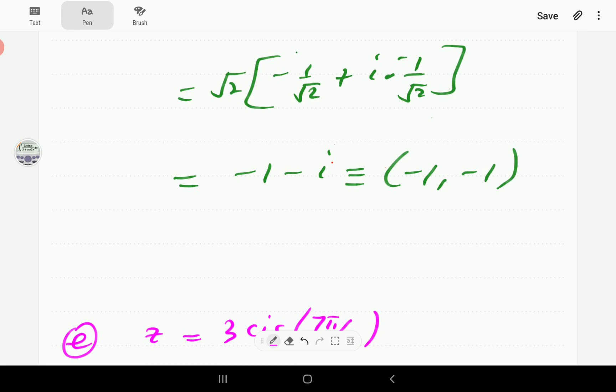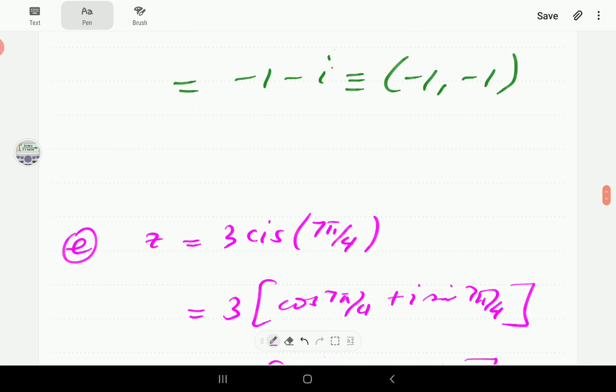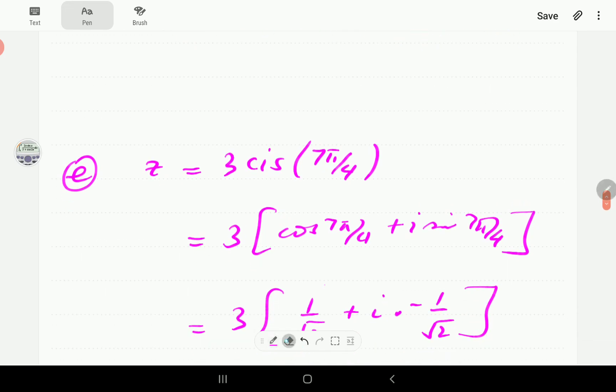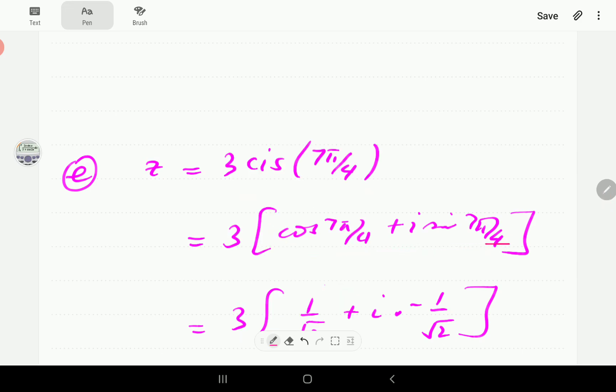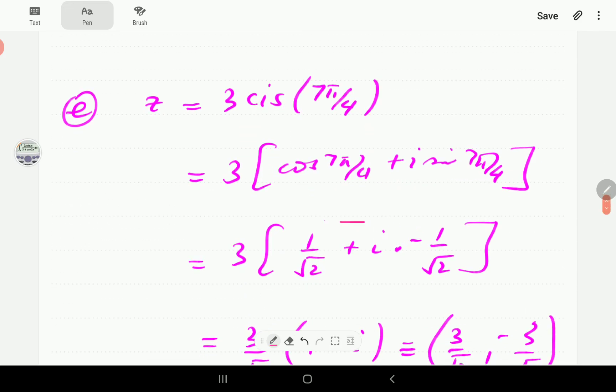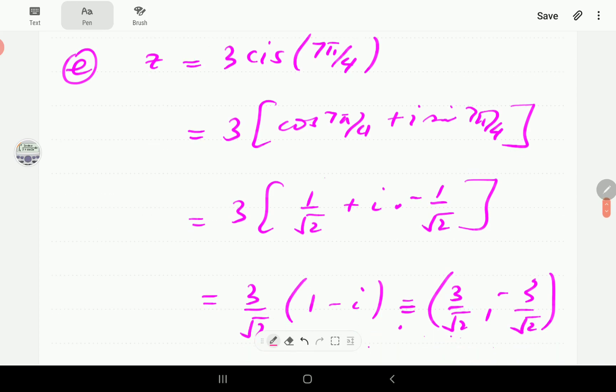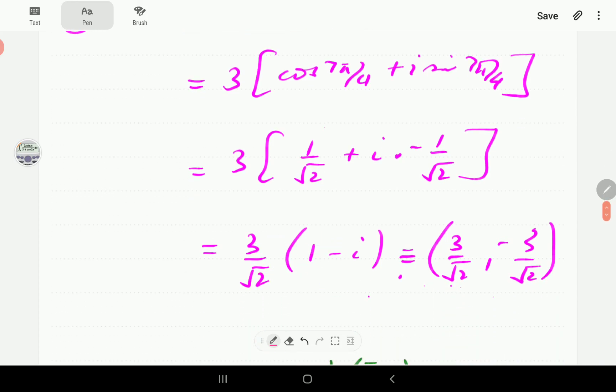For part (e) we've got three times cis seven pi on four. If we expand it, this is what we have. If we punch it in the calculator, that's what we get. So that is our x and that is our y.